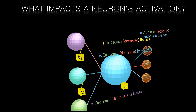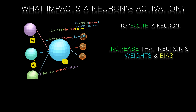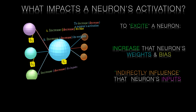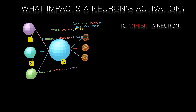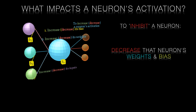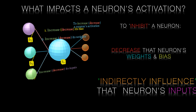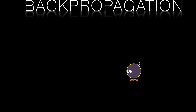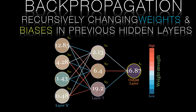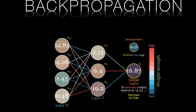If we need an excitatory response for a particular neuron, we can increase its own weights and biases. We can't directly influence the activation of the prior layer's neurons, but we can increase the weights and biases of neurons in that prior layer. Similarly, if we need an inhibitory response, we can decrease its own weights and biases, and decrease the weights and biases of neurons in the prior layer. Changes to the weights and biases of neurons in previous layers is where the term backpropagation comes from. When training our network, we backpropagate our error from the output layer backwards through each of the hidden layers until we reach the input layer.